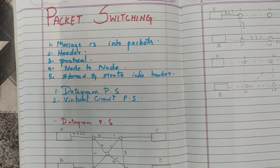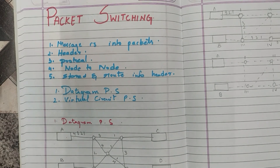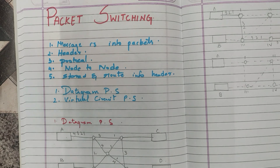One main advantage of packet switching is that a switching node can route the packets as required. The main disadvantage is that packets may be lost on their route, so sequence numbers are required to identify any missing packets. Thank you for watching this video — please subscribe, like, and share.